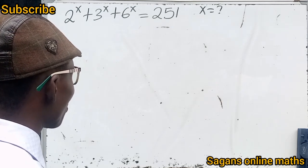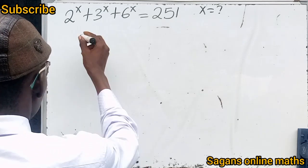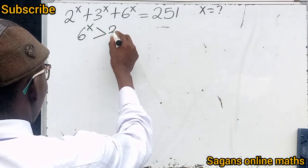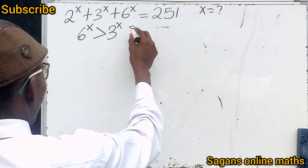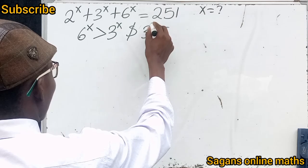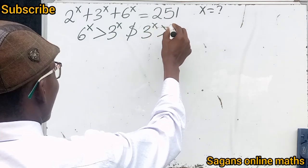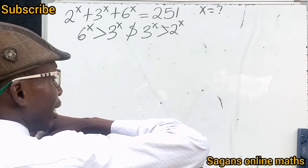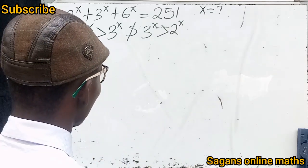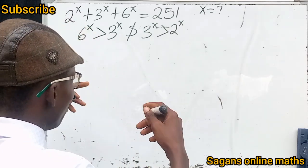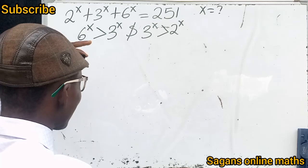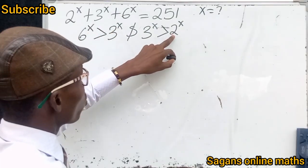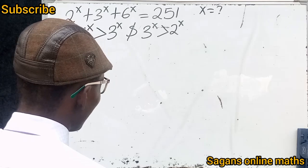I want you to understand something in this question: 6 raised to the power of x is greater than 3 raised to the power of x, and 3 raised to the power of x is greater than 2 raised to the power of x — no matter what x will be, because we don't know the value of x yet.